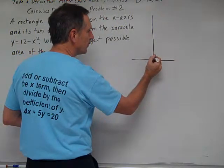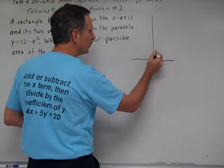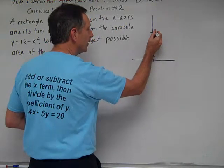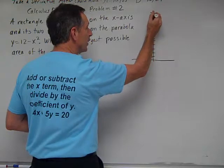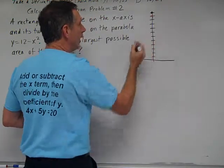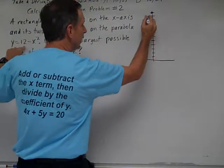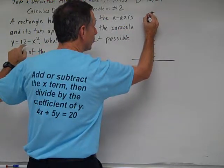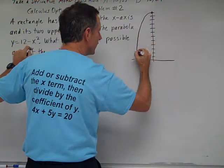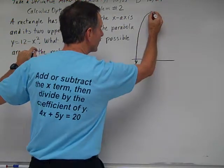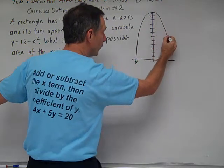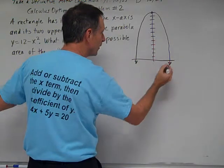So we have this parabola opening downward 1, 2, 3, 4, 5, 6, 7, 8, 9, 10, 11, 12, and we have a y-intercept of 12, and we have a downward opening parabola. We have negative x squared instead of positive x squared, and so the downward opening parabola is going to look something like this.